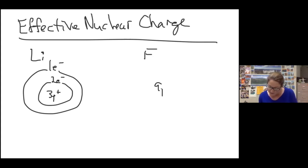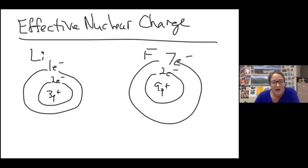Fluorine has nine protons with two electrons in the first shell and seven electrons in the second shell. The difference in size here was not intentional. It turns out that that's not true at all.